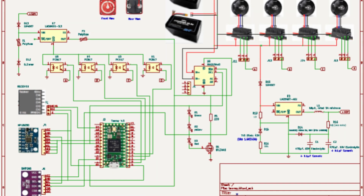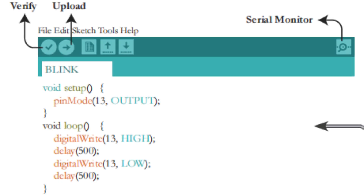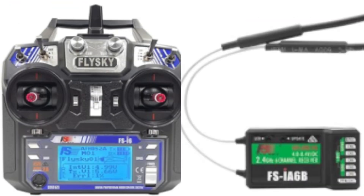Assemble and bench test the flight controller per instructions. Download and install the Arduino IDE and Teensyduino onto your laptop. Configure the transmitter to use PPM for your project by switching on the transmitter.